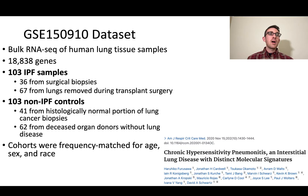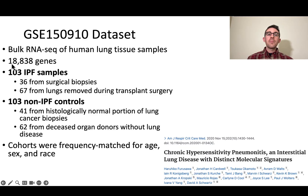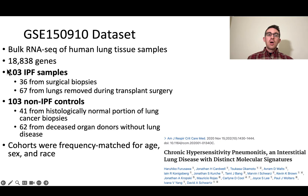Bulk RNA-seq — hopefully you remember from the previous videos — is basically quantifying the messenger RNA content of the samples. It's going to be of human lung tissue samples, and it's going to quantify the mRNA content for 18,838 genes. So basically, quantifying the mRNA content in these samples for around 18,000 genes. There are going to be 103 IPF samples and 103 control samples.